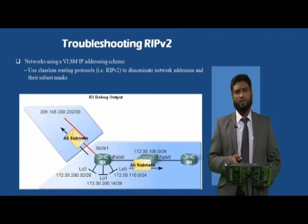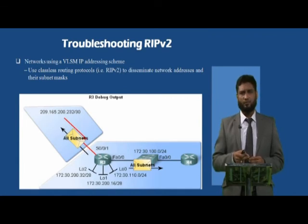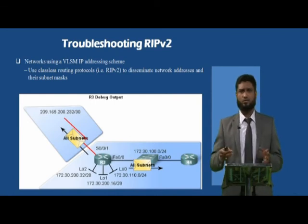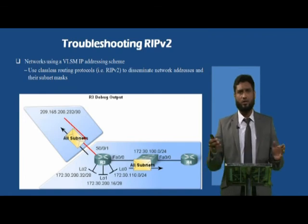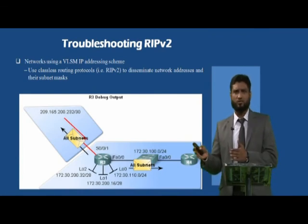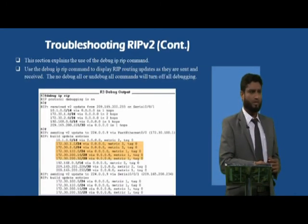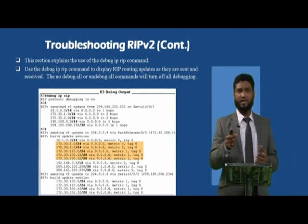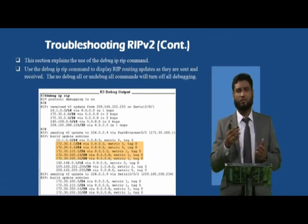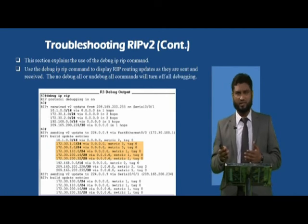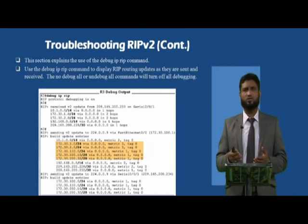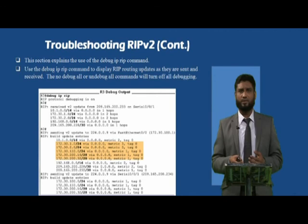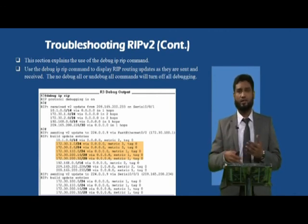Troubleshooting: to verify whether updates are being sent from one router to another, use 'debug ip rip'. In the analyzer, you will see information updating from one place to another. From this you can confirm whether information is updating appropriately. After verification, use 'undebug all' — updates will no longer be displayed, but routing information continues to be updated in the background.